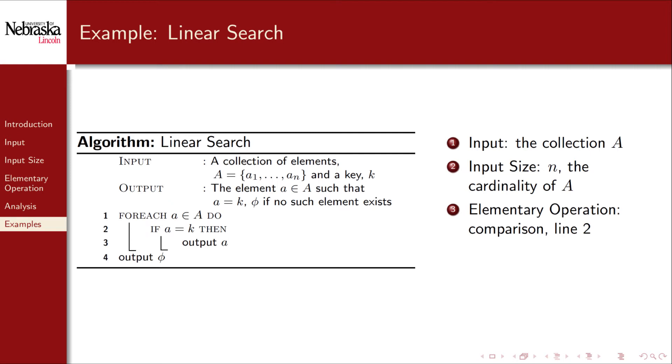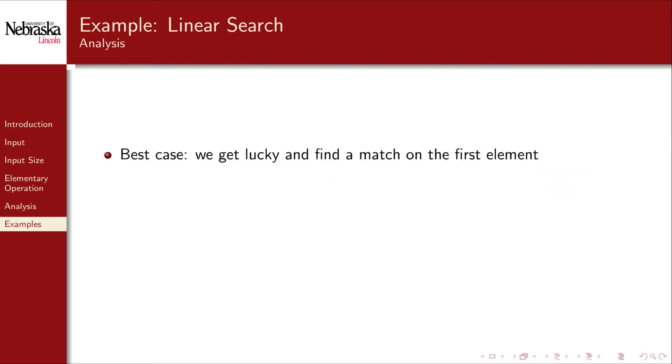The number of times that a comparison on line 2 is executed is actually variable and depends not only on the input size, but the nature of the input as well. We could consider a best case scenario where we get lucky and find a match at the first element. In such a case, we would end up only performing one comparison and ending the algorithm.